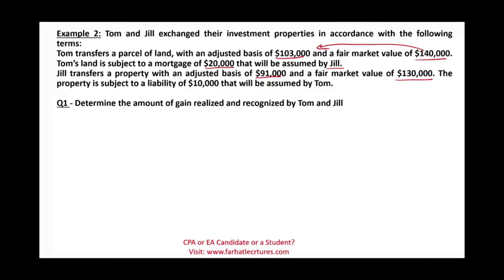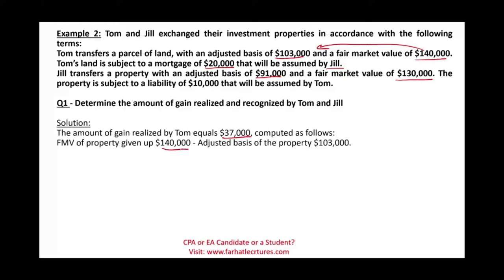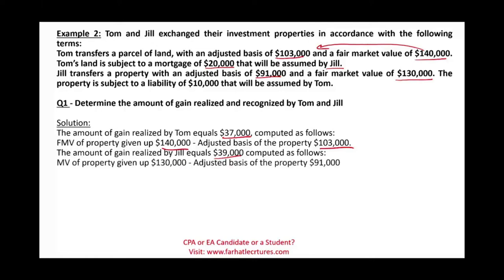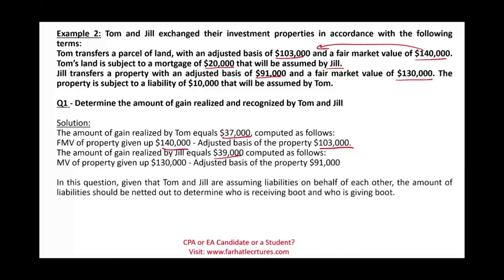Determine the amount of gain realized and recognized by Tom and Jill. The gain realized by Tom is $37,000 — the difference between $140,000 and $103,000. The gain realized by Jill equals $39,000, which is $130,000 minus $91,000. Now, we have to be careful — both parties are assuming liabilities on each other's behalf, so we need to net them out and see who is assuming more.